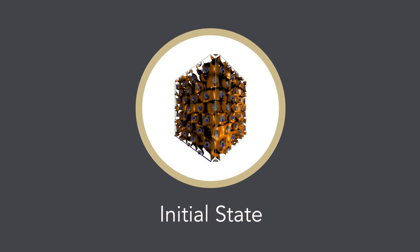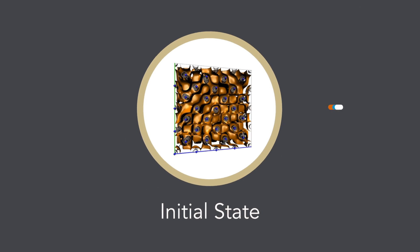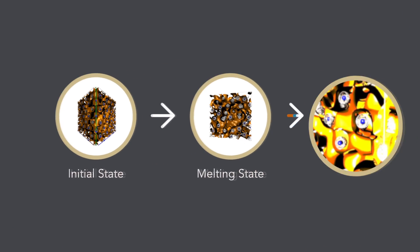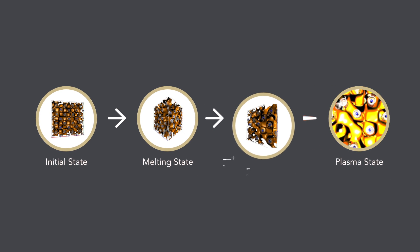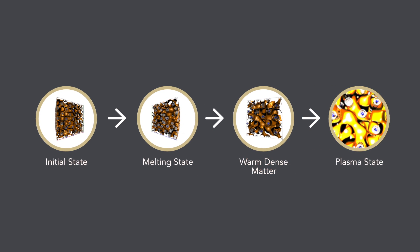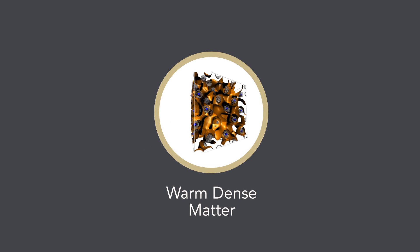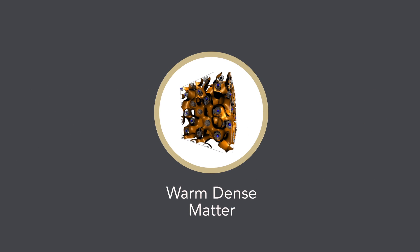The aluminum first compressed into a dense solid state, then began to melt, and finally transformed into a dense plasma. However, between the solid and plasma phase, scientists observed that the aluminum suddenly transitioned into warm dense matter, where it exhibited qualities of both a solid and a dense plasma.